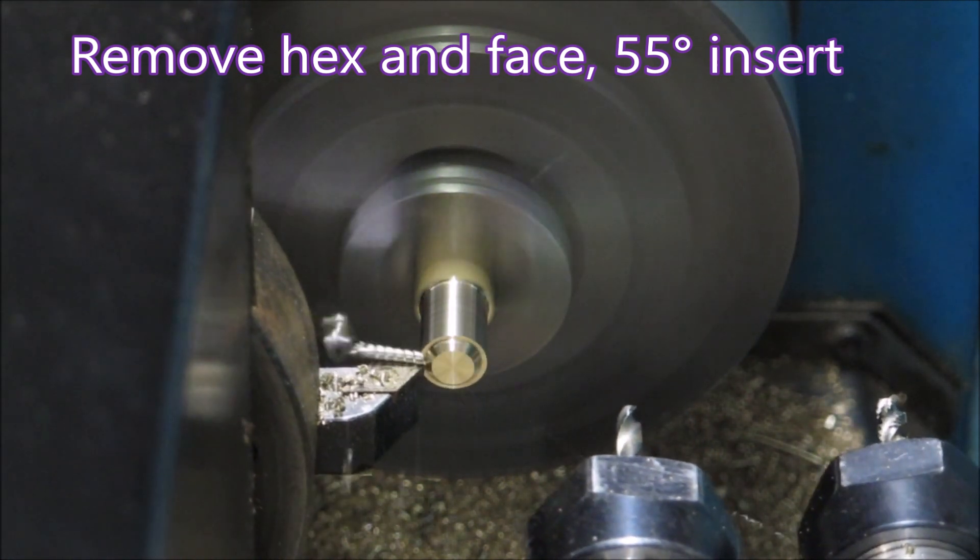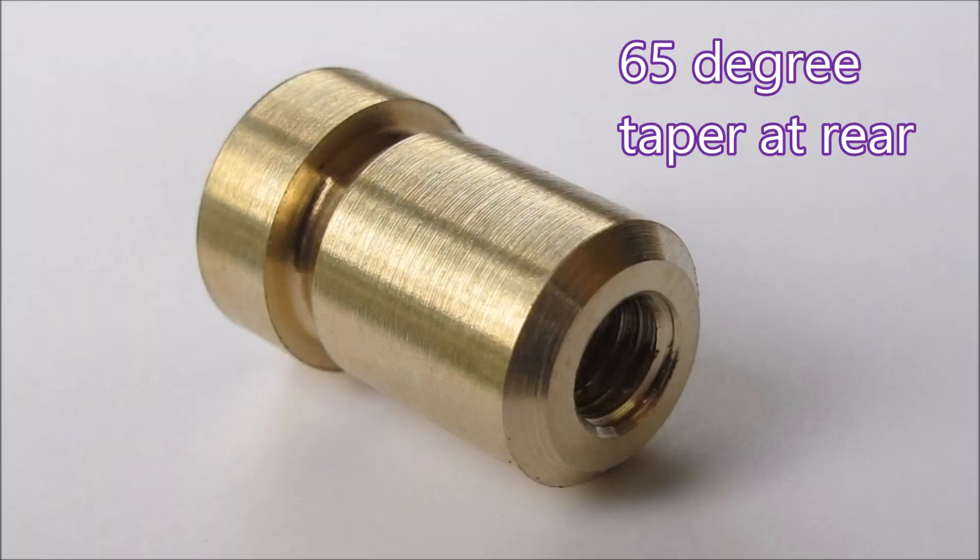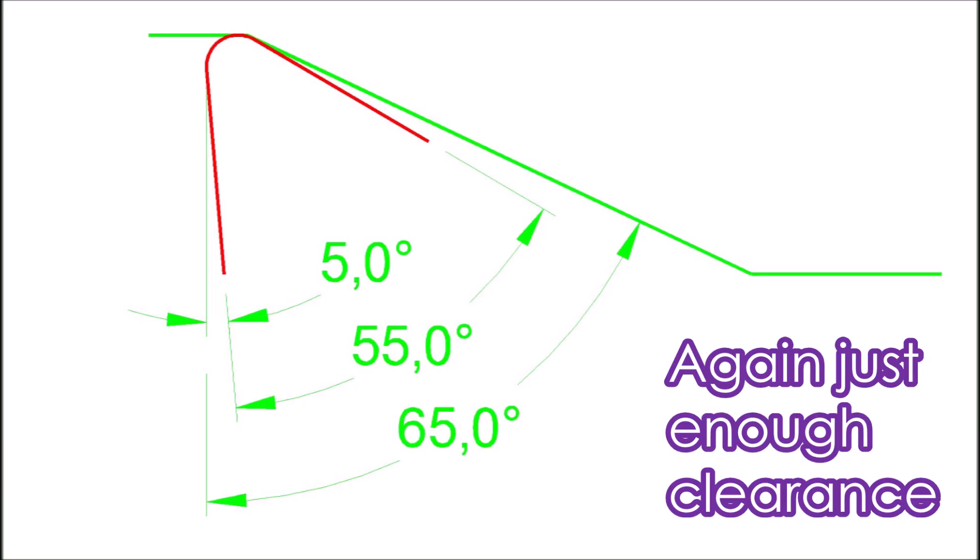Here you can see a 55 degree insert making a brass part. Even allows me to do a 65 degree chamfer on the back edge. But you can see on that part, if you look closely here, you can see the five degrees clearance on the back edge of the insert.